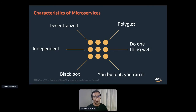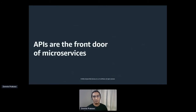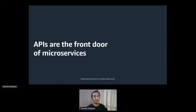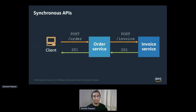Being decentralized and independent are two aspects that become the foundation of this session. With the flexibility to build services, what we now need to understand is how services interact with one another. When it comes to communication, we naturally think about APIs. APIs are the front door of microservices — they become the interface to interact with services that hold the business logic of specific domains. And when it comes to APIs, we naturally think to build REST APIs or some form of synchronous communication.